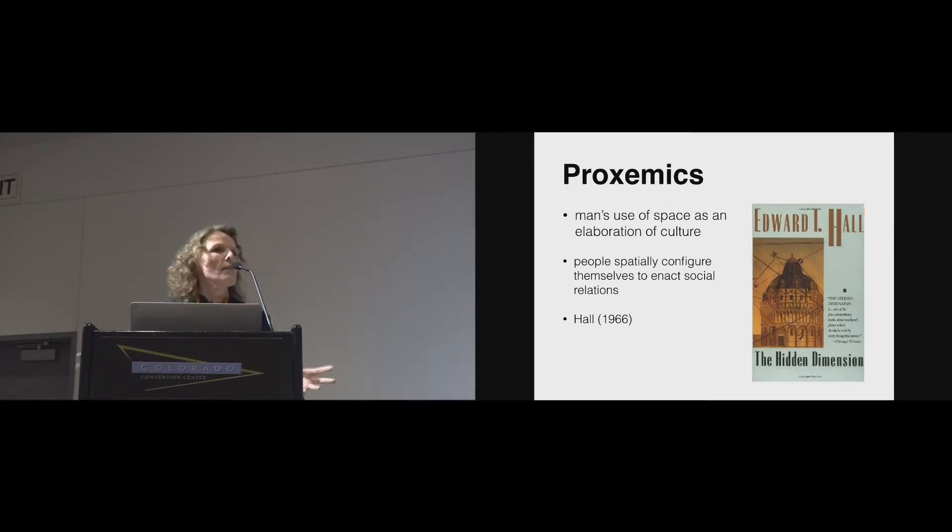So, over the past five or more years, this work has gained increasing attention in the CHI community. If we go back to Hall's work and the way that he described proxemics, he articulates that proxemics is a man's use of space and as an elaboration of culture. It's how people spatially configure themselves to enact social relationship. And this is work dating back to 66. So, here it's obviously not described with relation to interactive technology, but merely with respect to our environments and also interiors and so on.